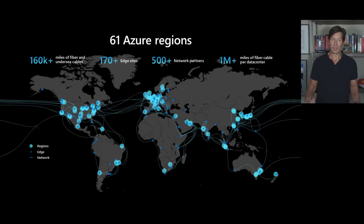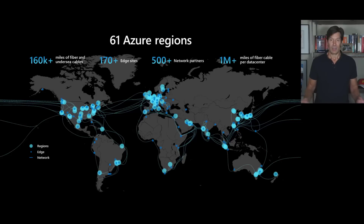We've got peering agreements with over 500 network providers to make sure we can honor strong SLAs even when traffic is coming in from their networks into ours. We continue to build this out with some of the largest subsea cables — for example, Marea — in terms of bandwidth connecting multiple continents together, and we continue to make huge investments in capital to build this network up.